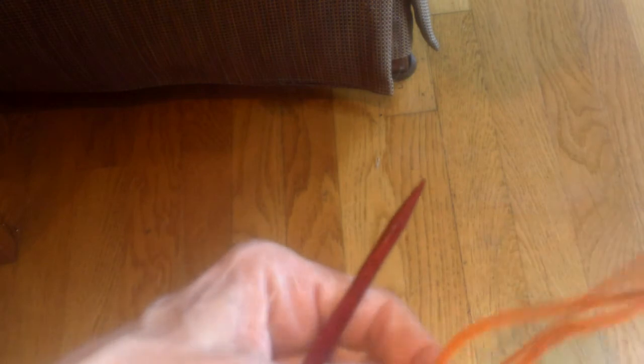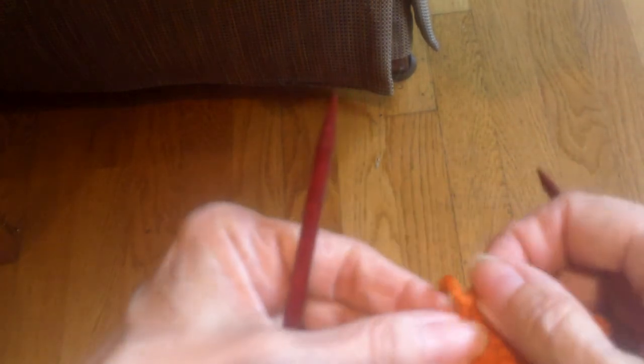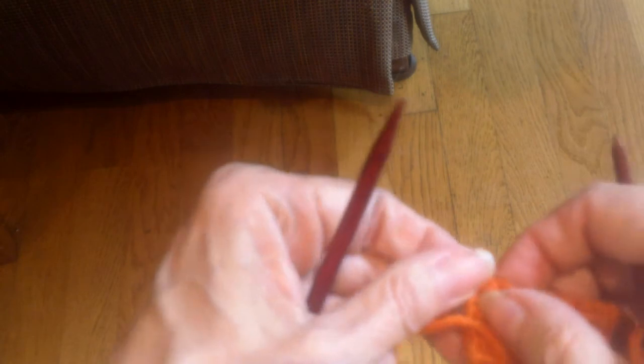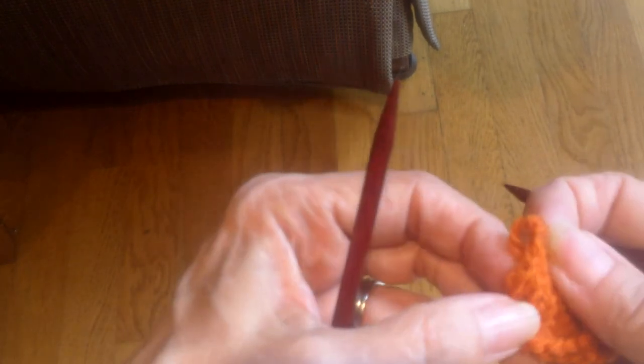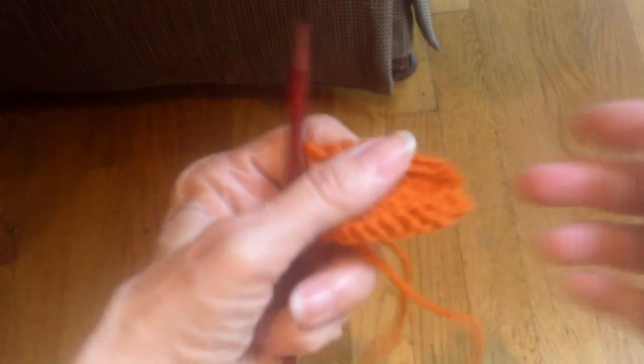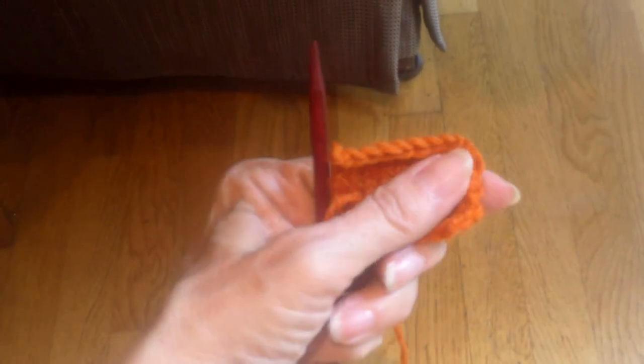Now the other thing that you can do—you are going to improve the appearance of it dramatically when you finish it off. When you pull that loop through, it neatens it up quite a bit, and that's the bind-off.